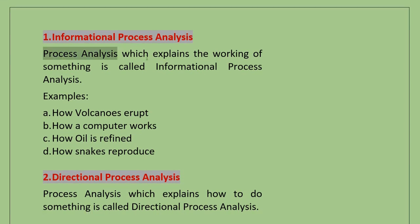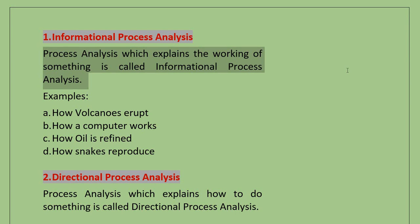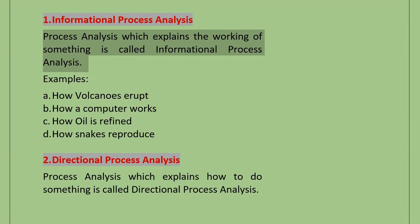Process Analysis which explains the working of something is called Informational Process Analysis. For example, how volcanoes erupt, how a computer works, how oil is refined, or how snakes reproduce. Such Process Analysis writings are called Informational Process Analysis — they give us information through a step-by-step process.